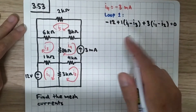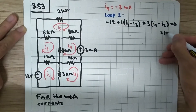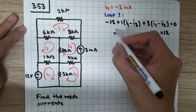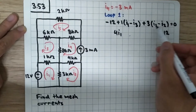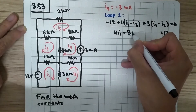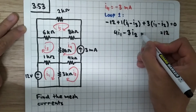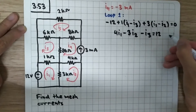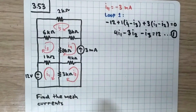Doing algebraic manipulation, we move minus 12 to the right-hand side to get 12. Then i1 plus 3i1 is 4i1, and for i2 we have minus 3i2, and for i3 we only have minus i3. This is equation number one.